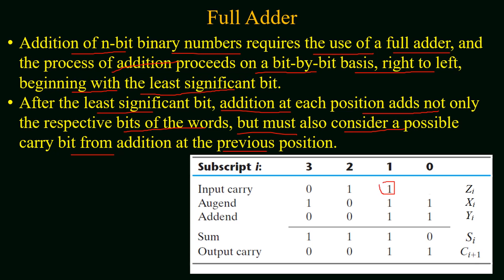Just like in normal arithmetic, when we add two numbers and get a carry in the result, that carry is added to the next higher significant digit. We start this addition from the least significant bit, and the same criteria is followed in the addition of binary numbers.